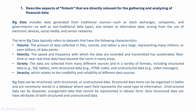Let's see what big data is. Big data, as its name implies, is data in a huge volume. It is data generated from traditional sources such as stock exchanges, companies and governments, as well as non-traditional data types such as data arising from electronic devices, social media and sensor networks. There are four characteristics of big data, collectively called V4. First, volume: the amount of data collected in files, records and tables is very large, representing millions and trillions of data points.